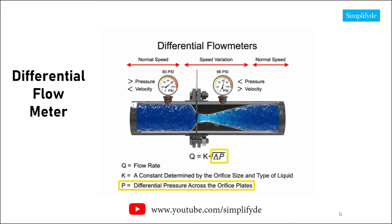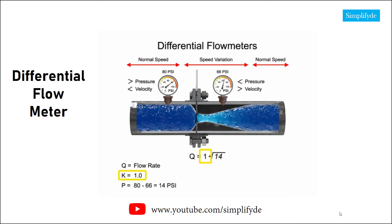For example, if the differential pressure increases by 14 psi with a k-factor of 1, the flow rate is increased by 3.74.